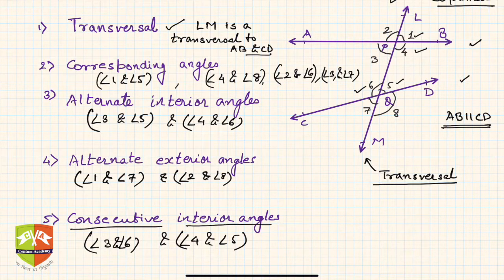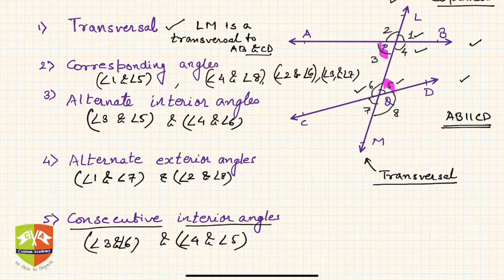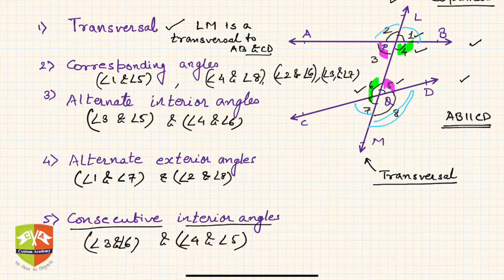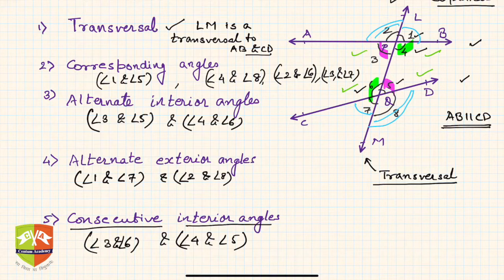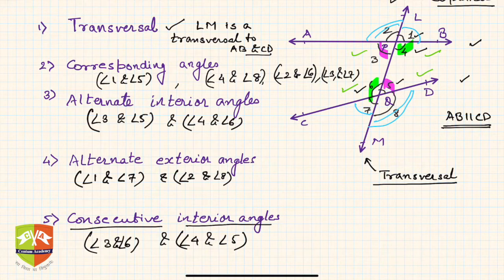To summarize: if AB and CD are two lines with LM as the transversal, corresponding angle pairs are 1&5, 2&6, 3&7, and 4&8. Alternate interior angles are the pairs between the two lines on opposite sides of the transversal. Alternate exterior angles are 1&7 and 2&8. Consecutive interior angles are 4&5 and 3&6. With this knowledge of angles associated with two coplanar lines and a transversal, we will move towards understanding theorems and properties in the next session.